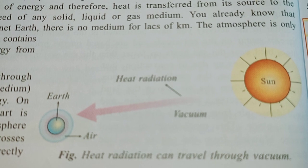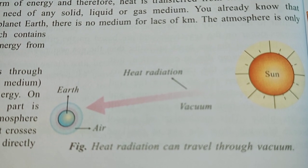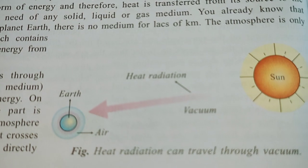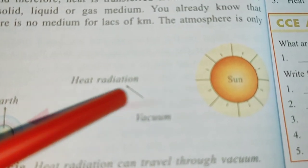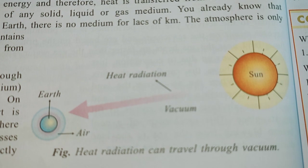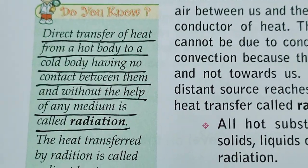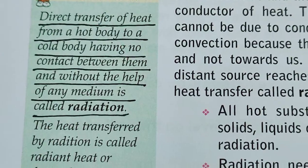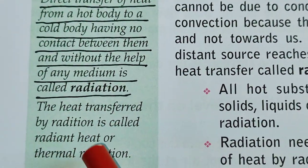Heat from the source of energy — the sun — reaches Earth through vacuum by the process of radiation. The layer of atmosphere is present only surrounding Earth; the rest of the universe is vacuum. We can define radiation as the direct transfer of heat from a hot body to a cold body, having no contact between them and without the help of any medium. The heat transferred by this process is called radiant heat or thermal radiation.